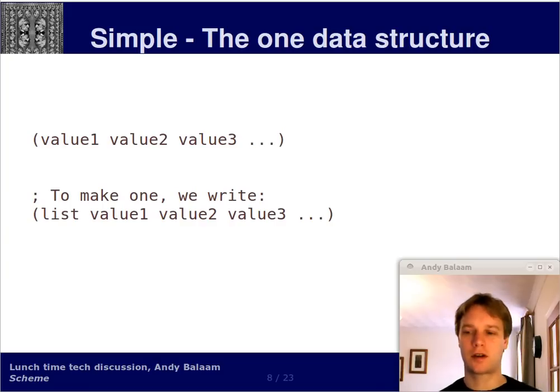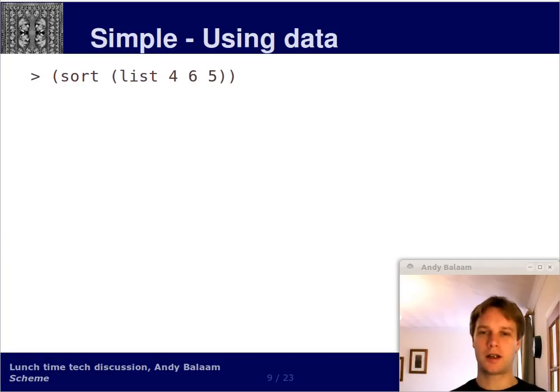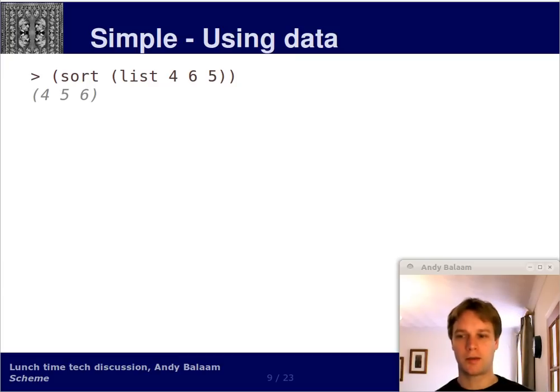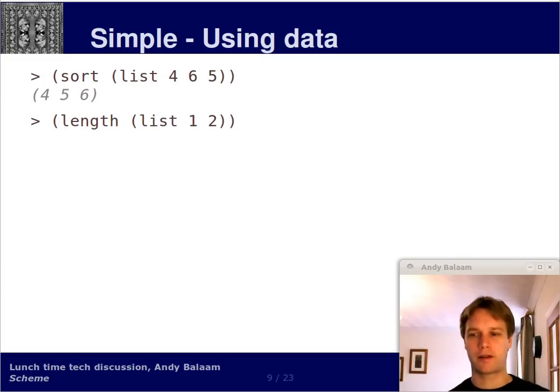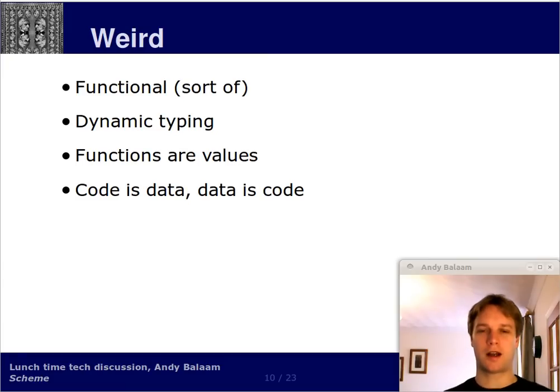Okay, so those were functions. Now let's look at data. So there's only one type of data structure in Scheme. Well, depending on how you define it. And it's a list of things. And notice that that is written exactly the same way as a procedure or a function that we've looked at before. So when the interpreter responds to you with a list, it's going to look like the thing at the top. If we want to make one and give it to the interpreter, then we have to use the list function. So that's what you can see down the bottom there. You just say list and then the things you want to be in that list. So let's have an example of doing this. We make a list of the numbers four, six and five, and then we pass that as an argument to the sort function. And you get back that list, but sorted. We ask for the length of this list, which obviously has two things in it. And the answer is two.